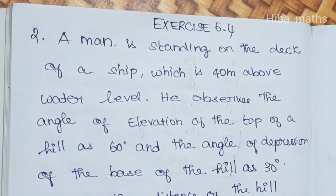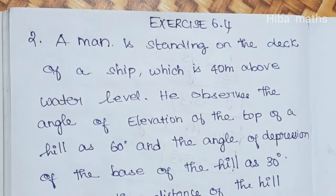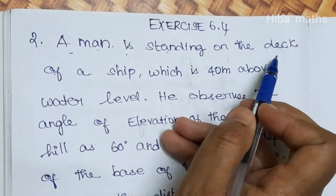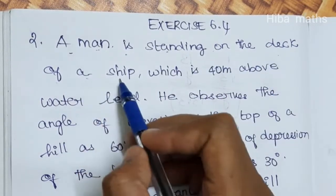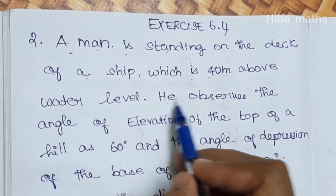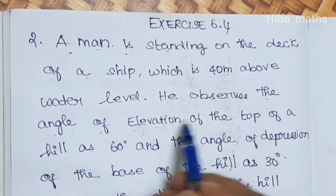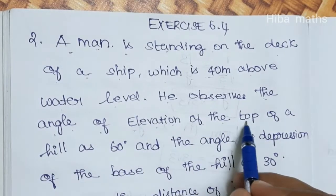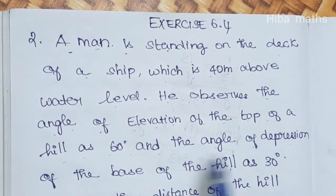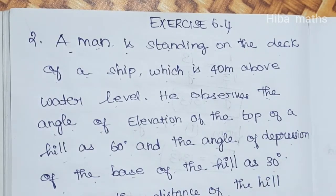Hello students, welcome to Hibamax. 10th standard math exercise 6.4, second question. A man is standing on a deck of a ship which is 40 meters above water level. He observes the angle of elevation of the top of a hill as 60 degrees and the angle of depression of the base of a hill as 30 degrees.